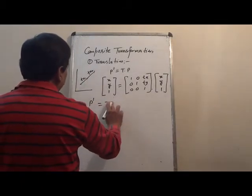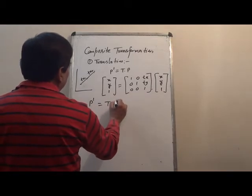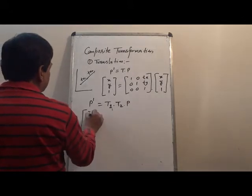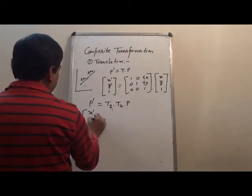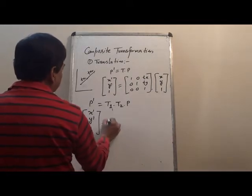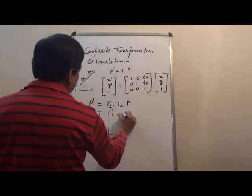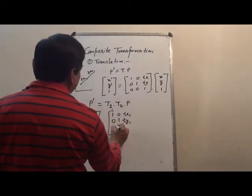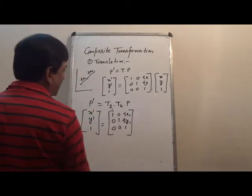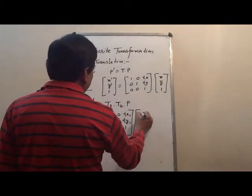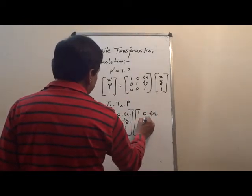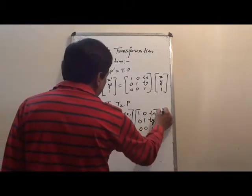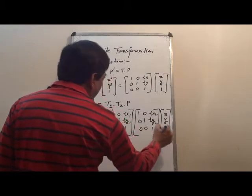When we take the composite transformation or translation, we can write P' equals to T1 and T2 into P. Or we can write x dash, y dash, 1 equals to T1 matrix [1, 0, Tx1; 0, 1, Ty1; 0, 0, 1] and T2 matrix [1, 0, Tx2; 0, 1, Ty2; 0, 0, 1] and x, y, 1.